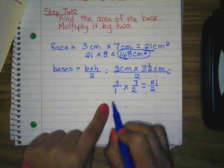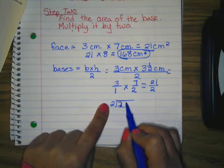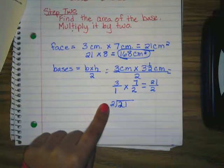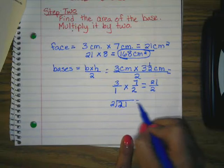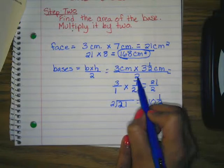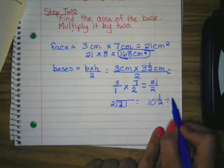I have an improper fraction. I'm going to go ahead and divide it to make it a mixed number, and if I do that, what do I get? Selma? Ten and a half. Very good.